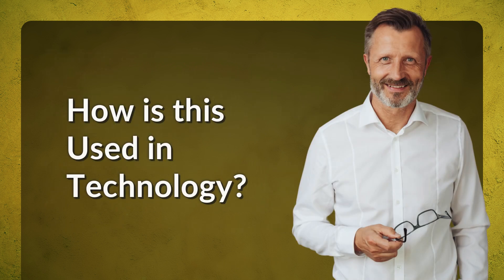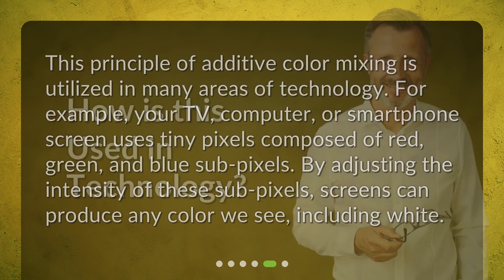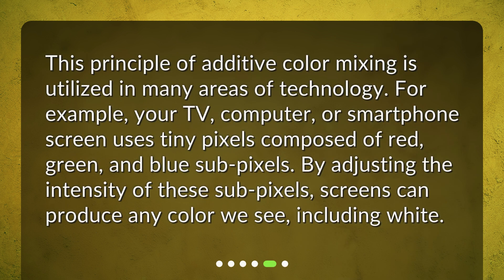How is this used in technology? This principle of additive color mixing is utilized in many areas of technology. For example, your TV, computer, or smartphone screen uses tiny pixels composed of red, green, and blue subpixels. By adjusting the intensity of these subpixels, screens can produce any color we see, including white.